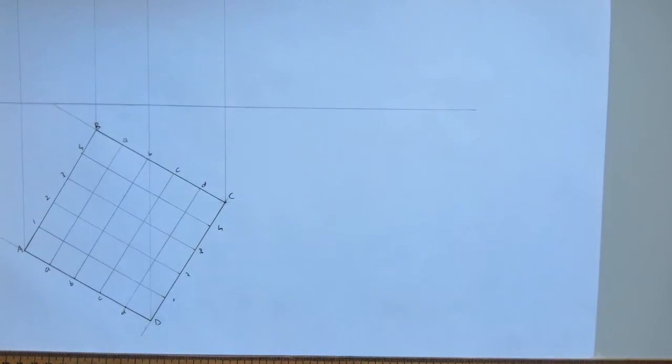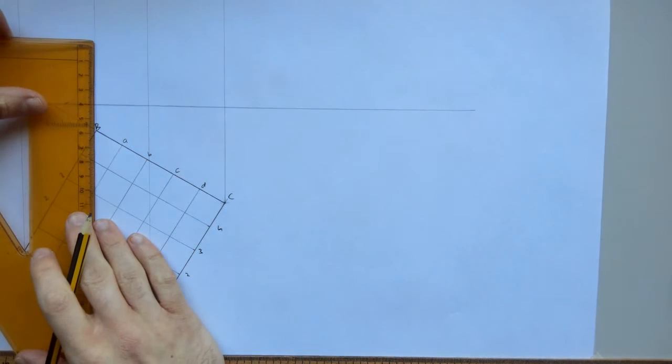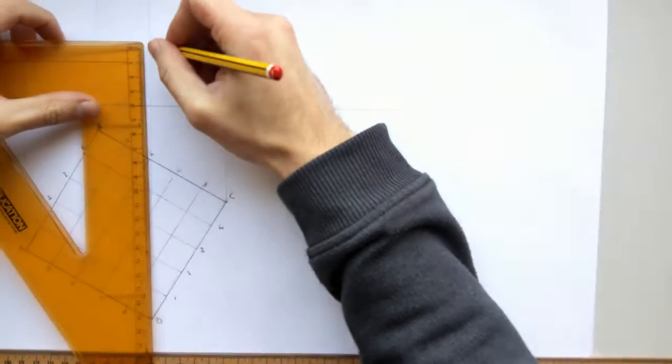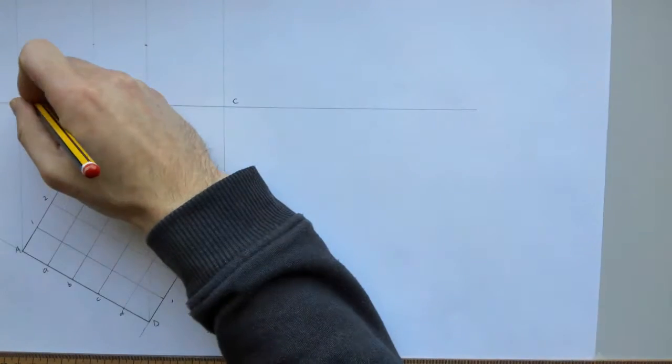Looking at the question I can see that B and D are at 40. So B and D are both at 40mm up. And then C and A are at ground level.